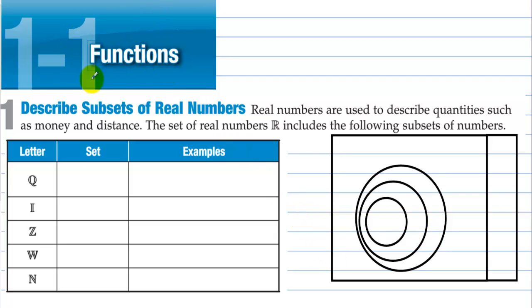Section 1.1, Functions. Describe subsets of real numbers. Real numbers are used to describe quantities such as money and distance. The set of real numbers R includes the following subsets of numbers.